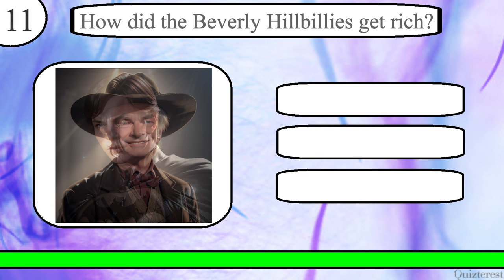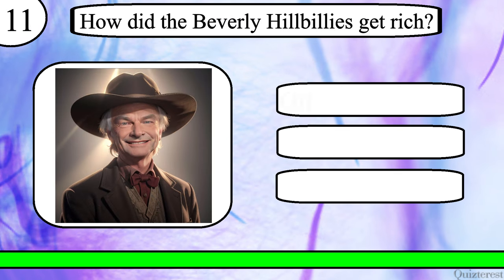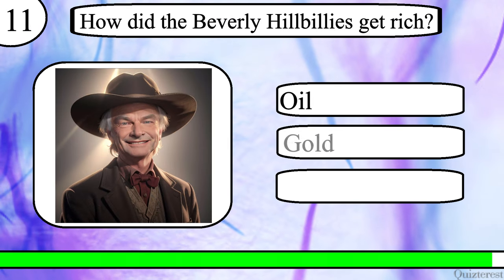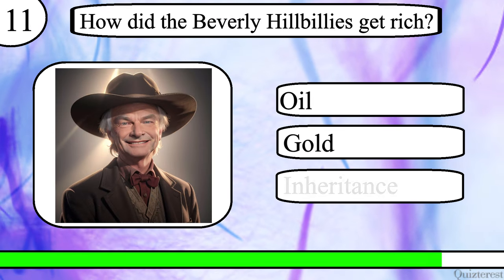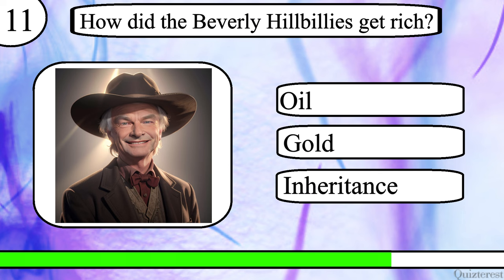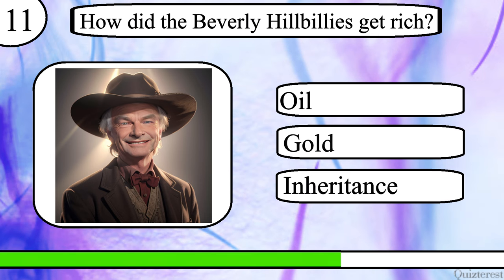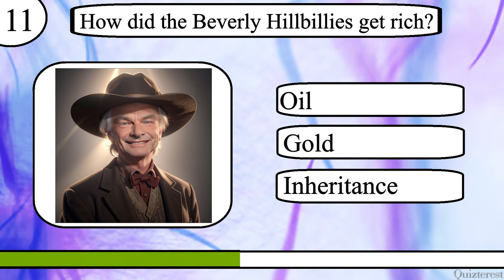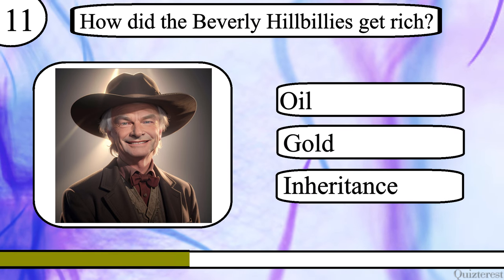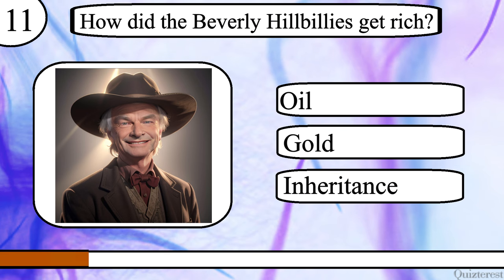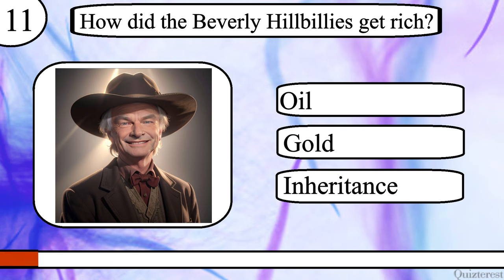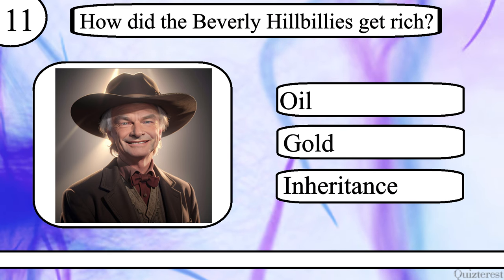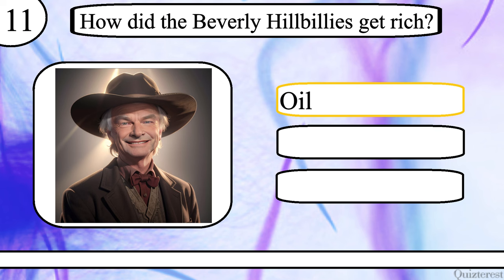Question 11. How did the Beverly Hillbillies get rich? Oil, gold or inheritance? The correct answer is oil.